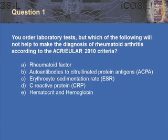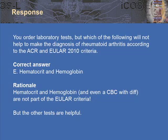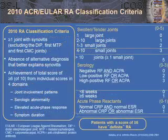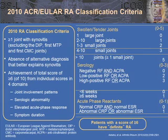The answer is E, hematocrit and hemoglobin. Hematocrit and hemoglobin, and even CBC with differential, are not part of the EULAR criteria, but the other tests are helpful. Looking at the 2010 ACR-EULAR classification criteria for rheumatoid arthritis, you need at least one joint with evidence of synovitis, but you exclude DIPs, the first MTP, and the first MCP joints. This diagnosis is only made if you don't find evidence of an alternative diagnosis to explain the synovitis.